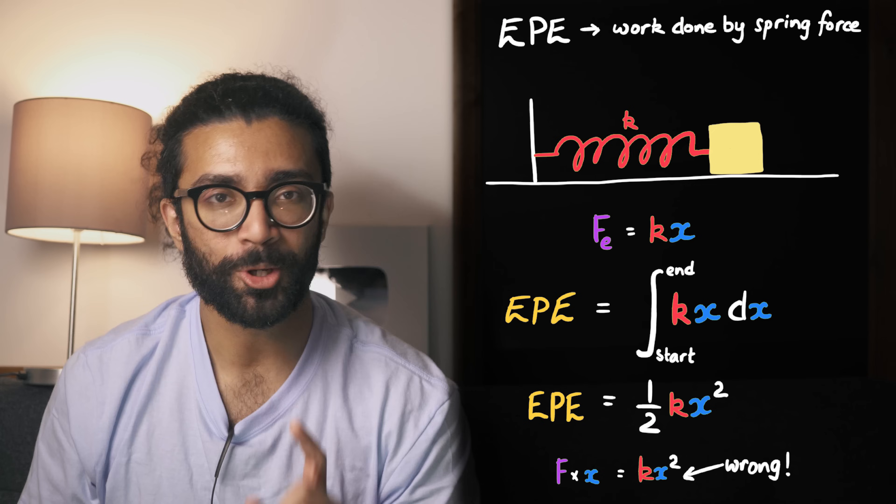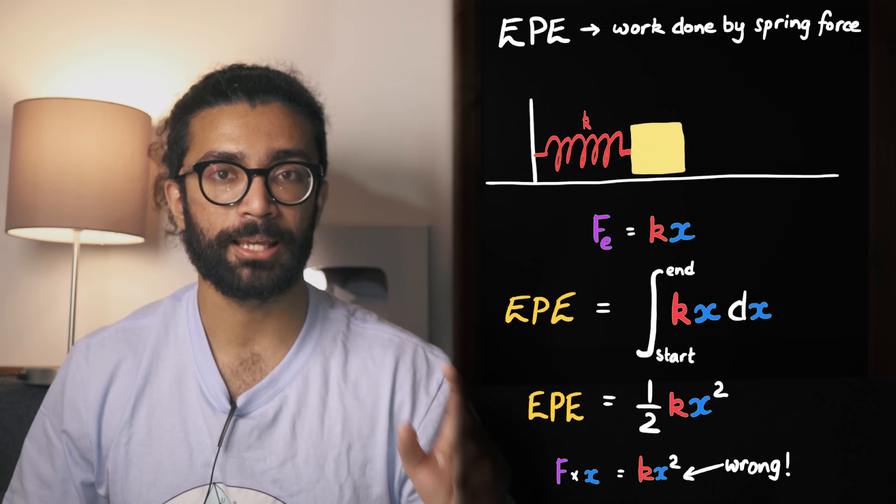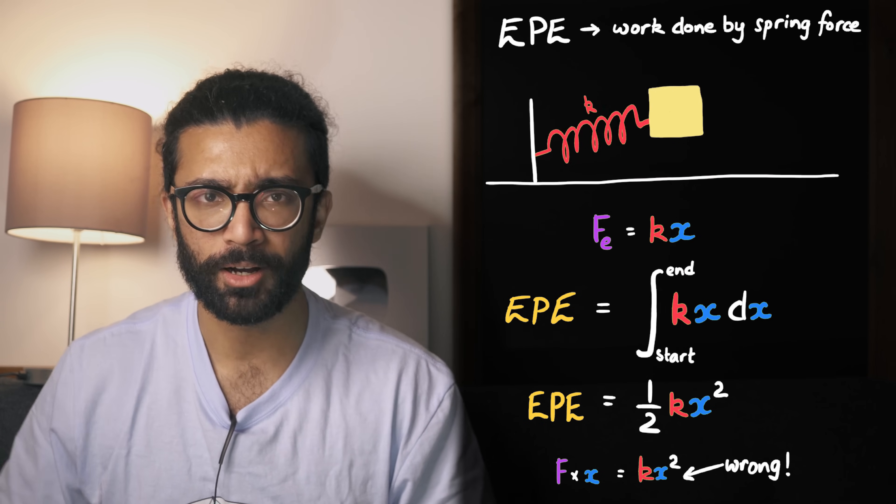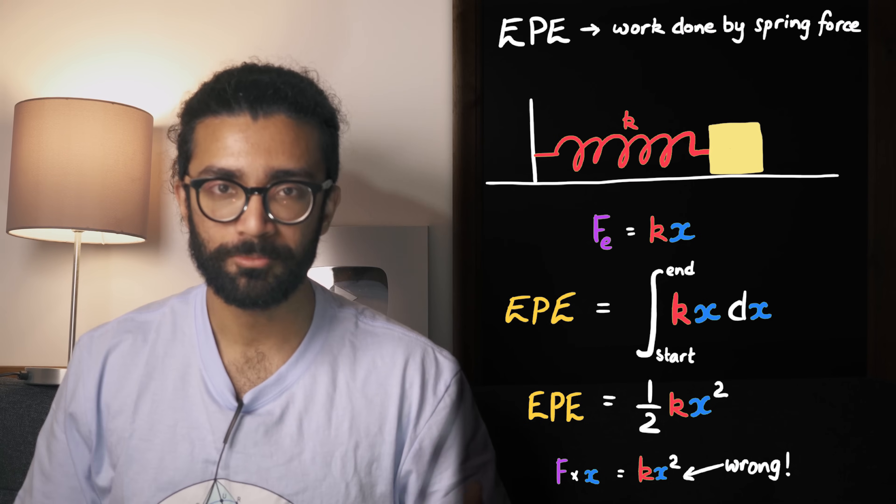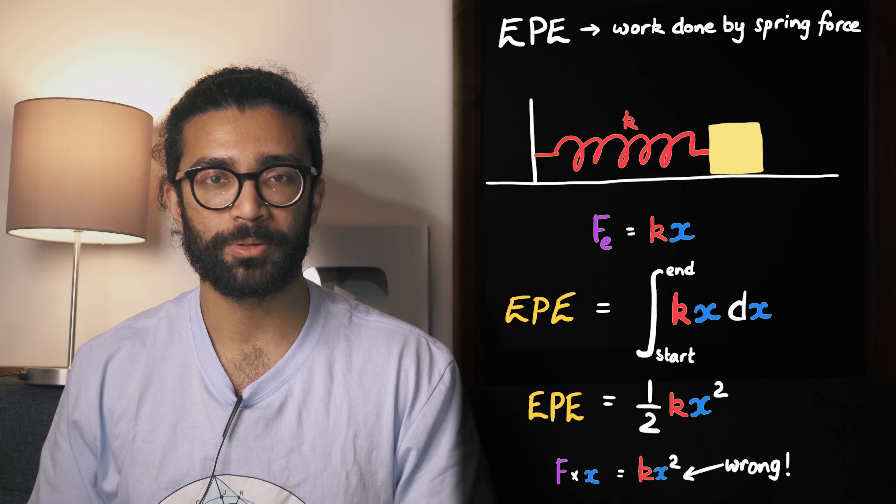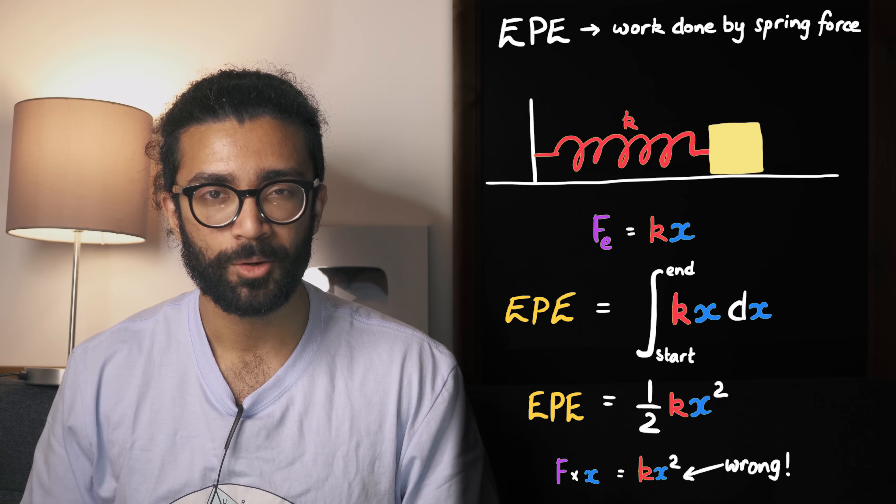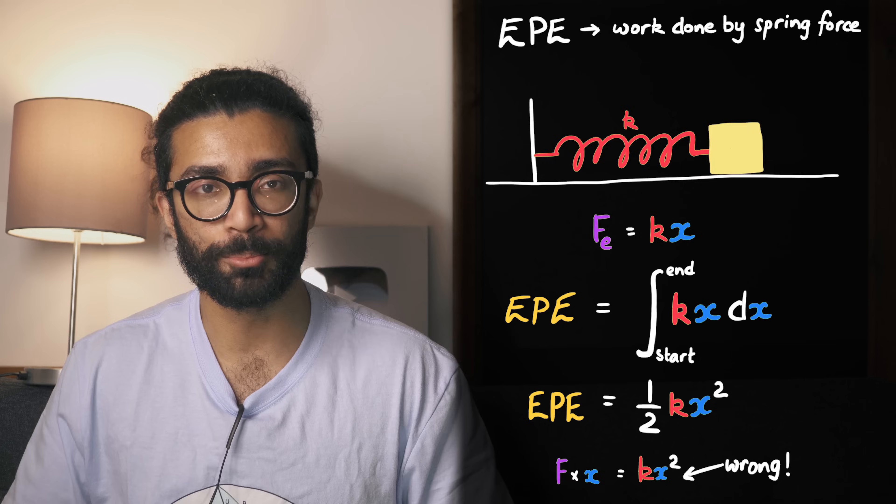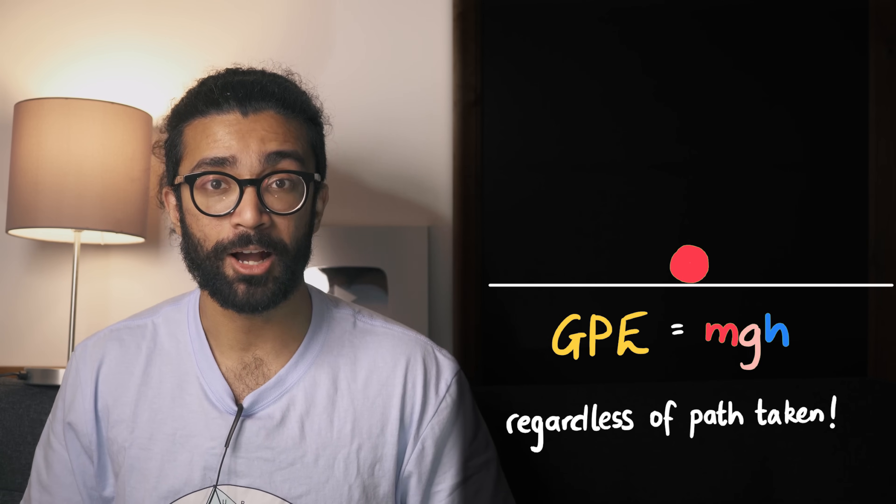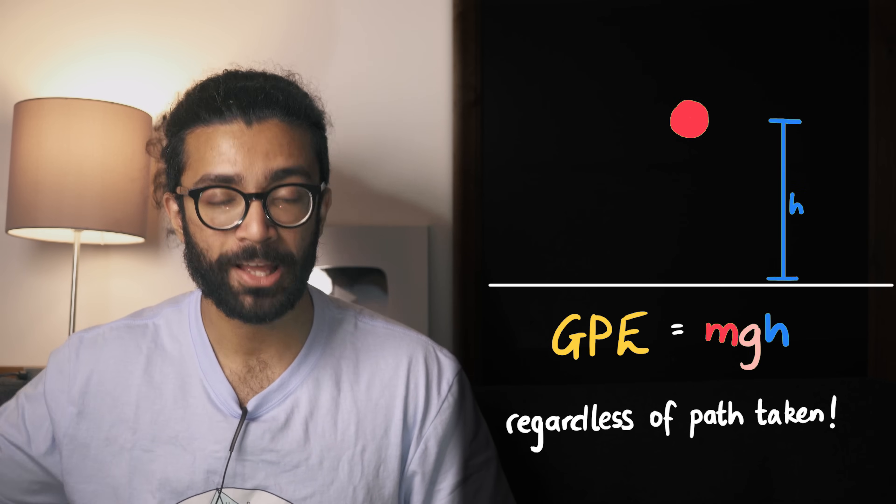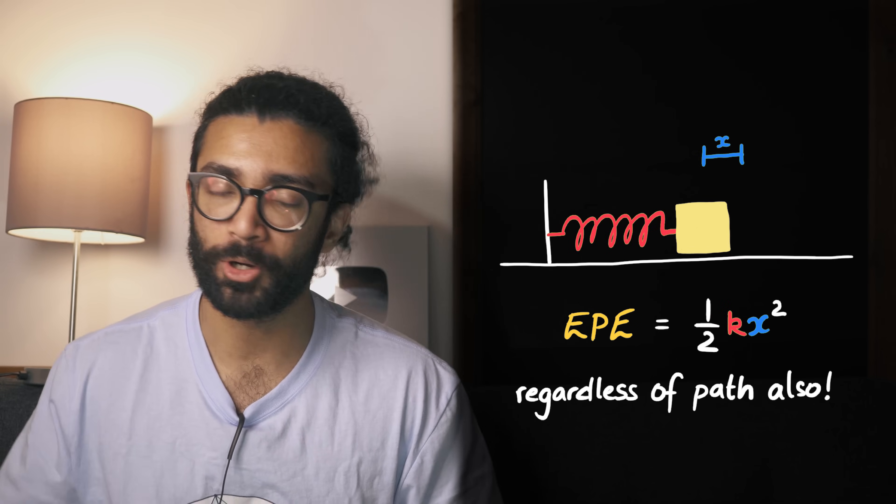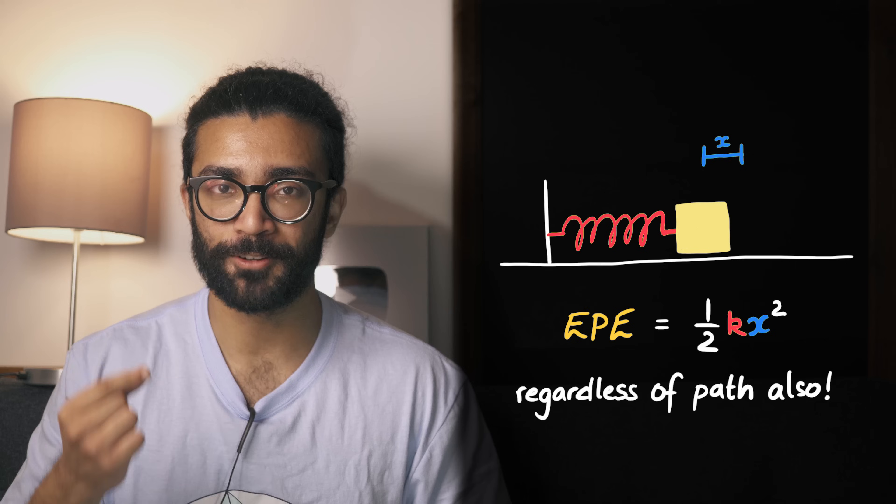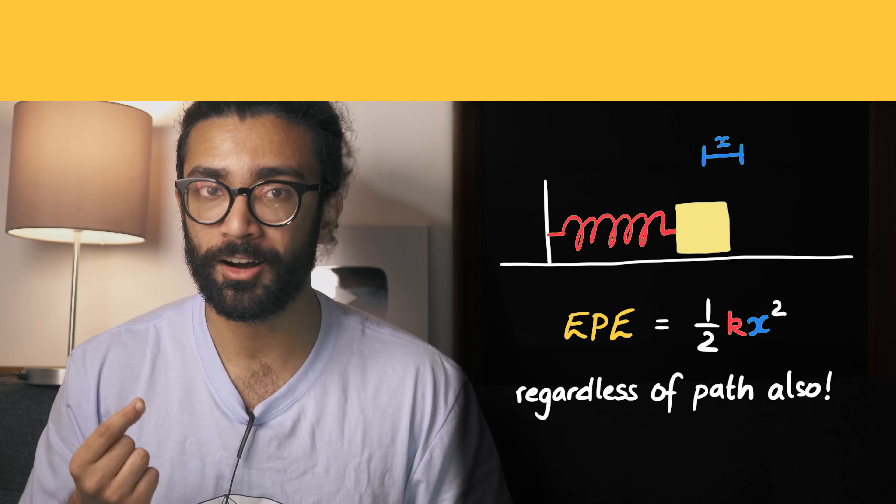What would happen, if the object started, and finished, at the same point, but took a different path, to get there? What's the change, in its potential energy? Well, as we know, from calculating potential energy, for simple objects, we don't care, how it gets from A to B. In the case of the ball, the only thing that matters, is how much, its height changes. And in the case of the spring, all that matters, is the change, in the extension, of the spring. And that is because, the forces, that we are dealing with, are,